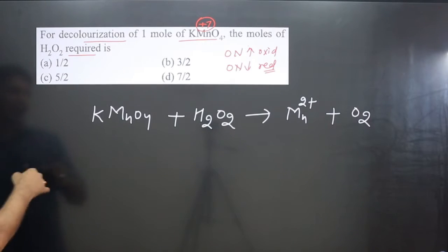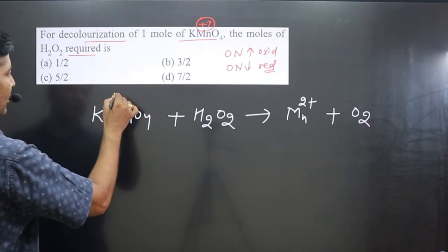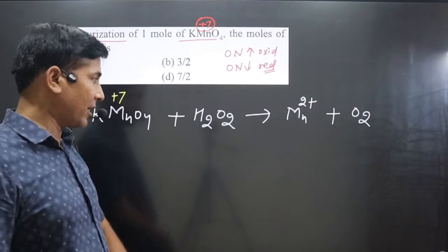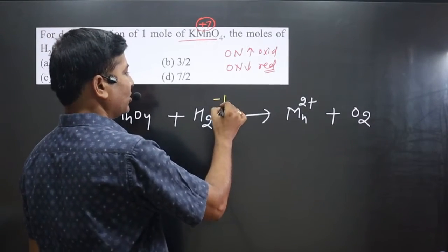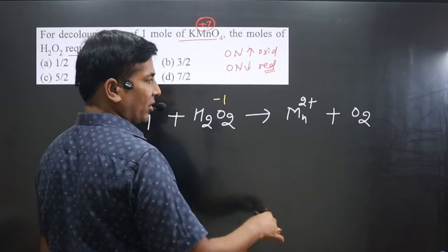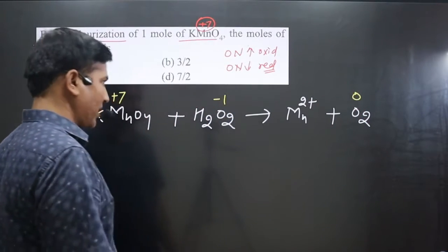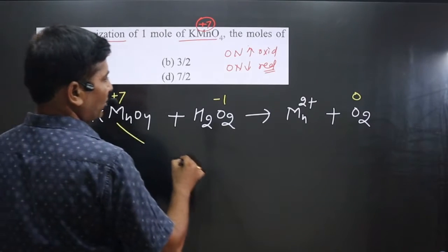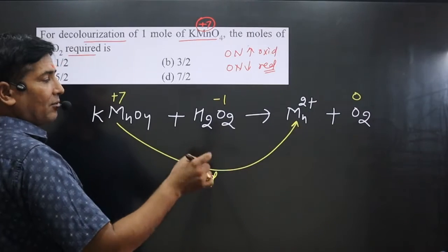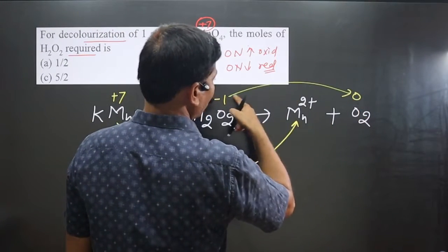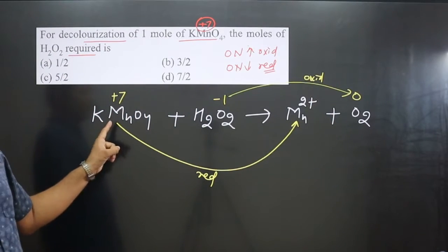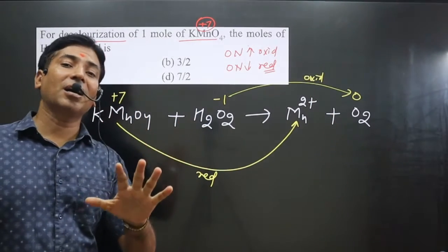Now we assign oxidation numbers on both sides. In KMnO₄: potassium is +1, manganese is +7. In H₂O₂: oxygen is in peroxide state, so it is −1. On the product side, Mn²⁺ is +2 (monoatomic ion, charge equals oxidation number), and O₂ is 0 (neutral molecule). Comparing: Mn goes from +7 to +2 — decrease, so reduction. Oxygen goes from −1 to 0 — increase, so oxidation.